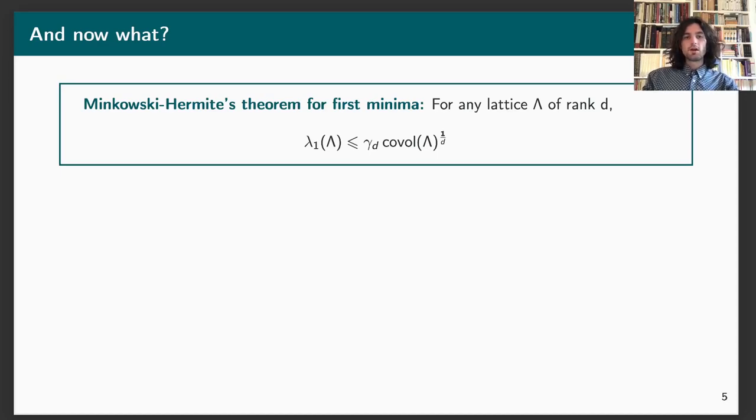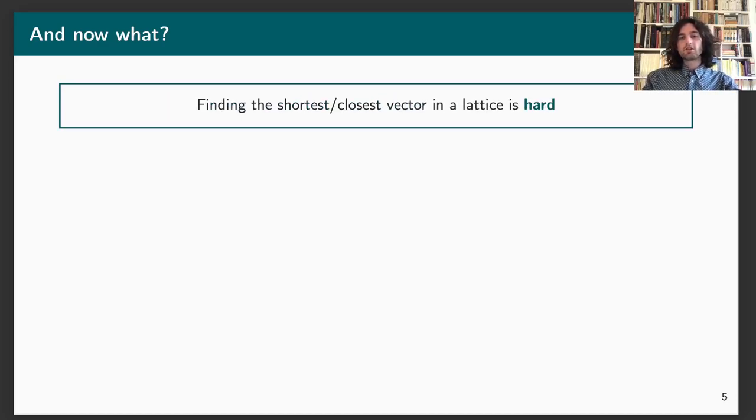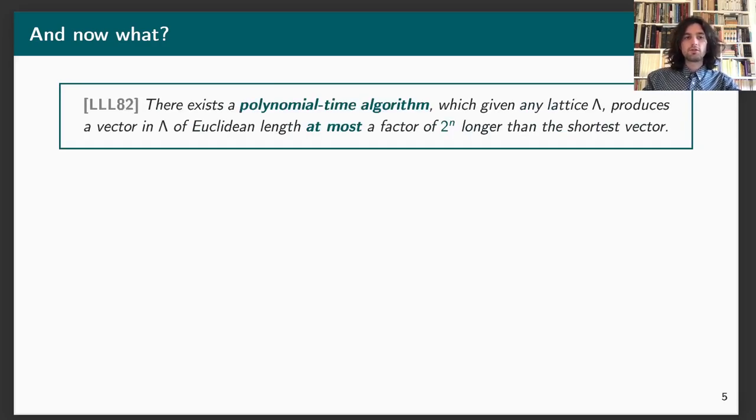So, we know that such short vectors exist. However, finding them algorithmically is a hard problem as it's been proved to be NP-hard. However, in 82, Lenstra, Lenstra, and Lovász showed that there exists some polynomial time algorithm which given any lattice lambda, will give you some lattice vector of length at most 2 to the n times longer than the length of the shortest vector.